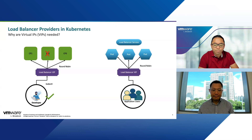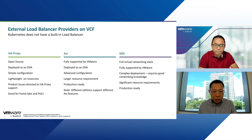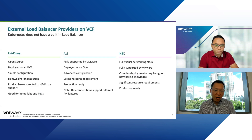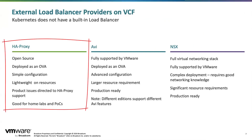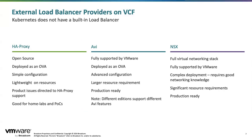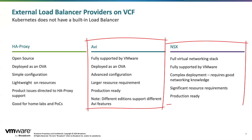Just to recap, we talked about three load balancer options in the previous episode. Kubernetes doesn't have a built-in load balancer, so you have to provide one as a prerequisite. You have the option of using HA proxy, but that is only good for home labs and POCs. For production environments, we're going to focus on AVI and NSX, as these two solutions are definitely production-ready.